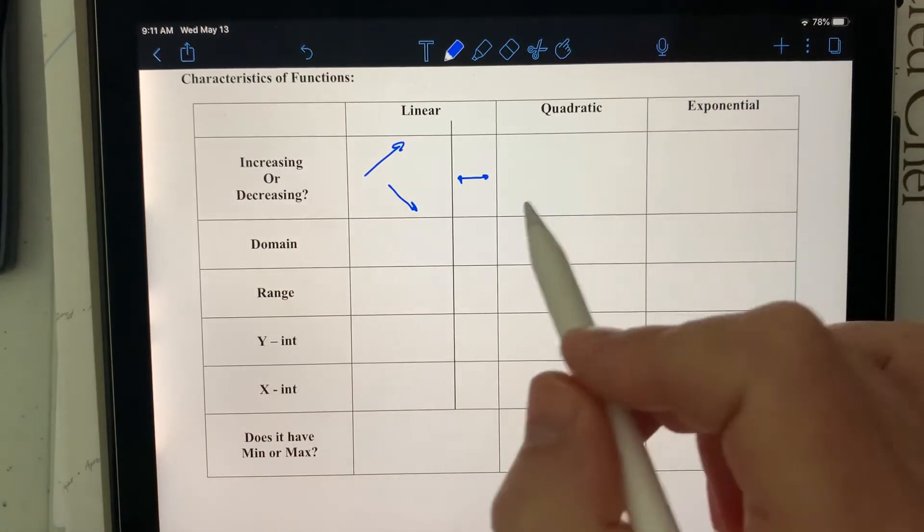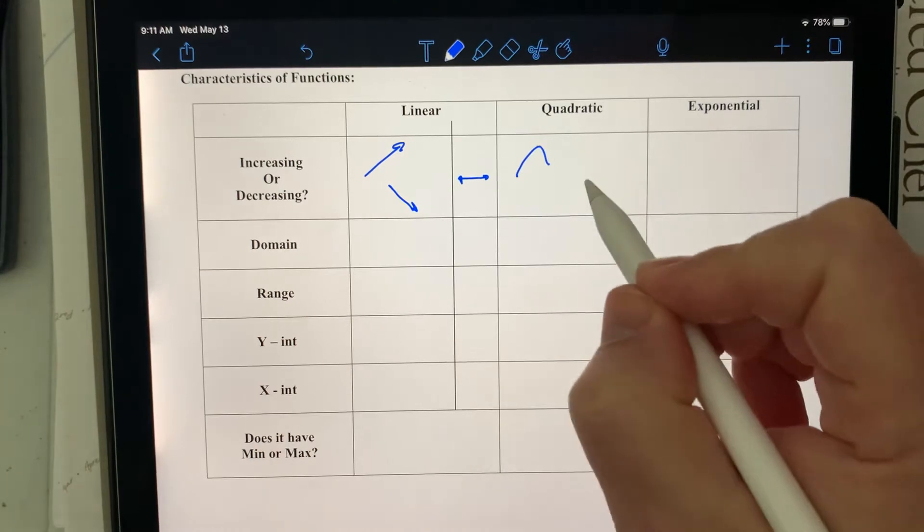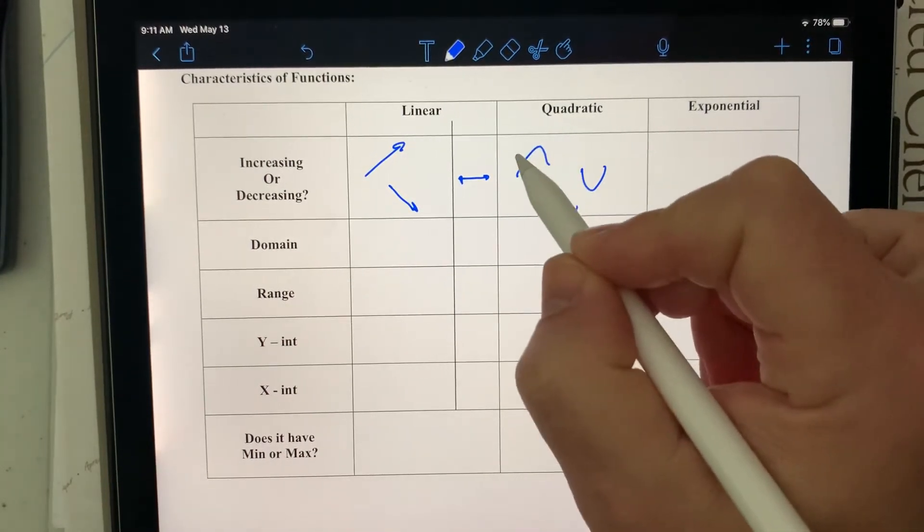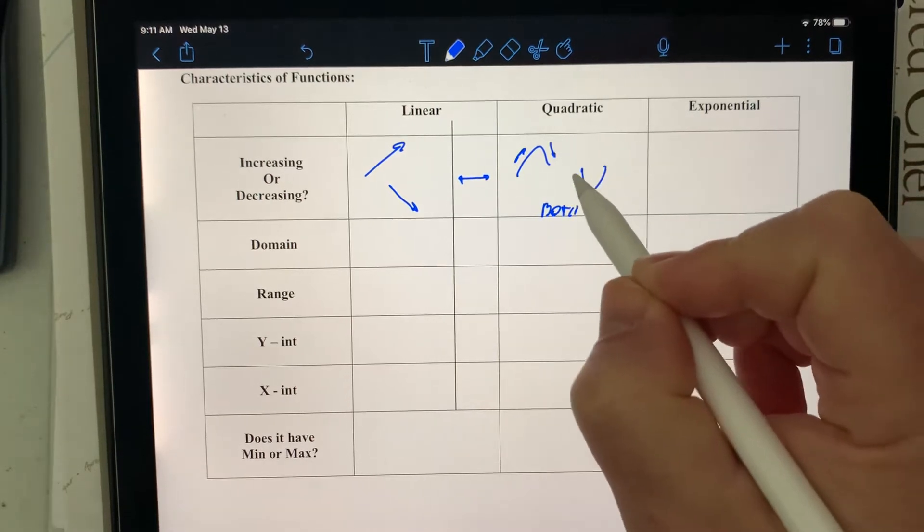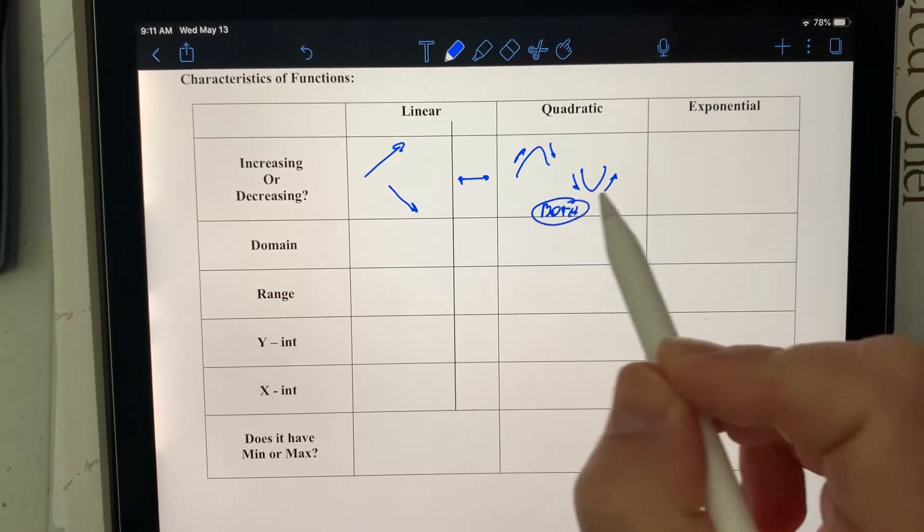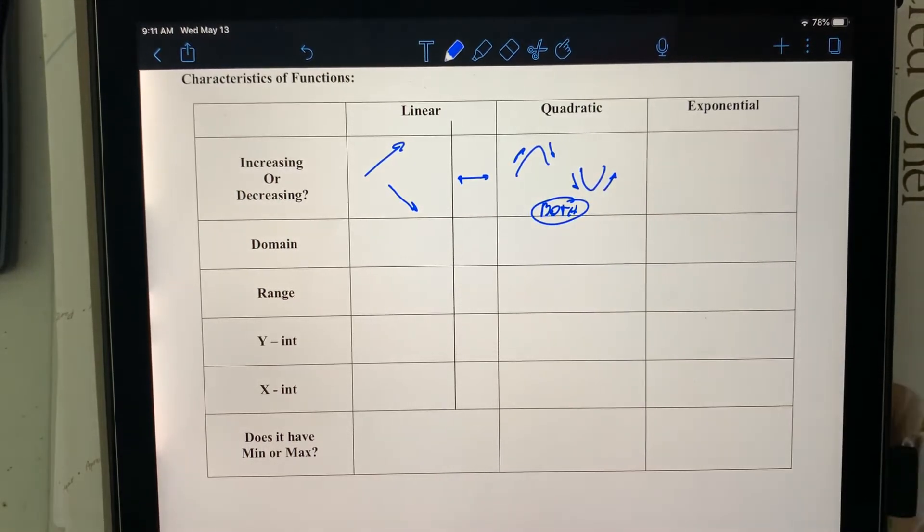So what about for a quadratic? Does it go up or down? Well, it does both, both for every function, because first it goes up then it goes down, or first it goes down and then it goes up. So this is the only one that has like both up and down on the same function.